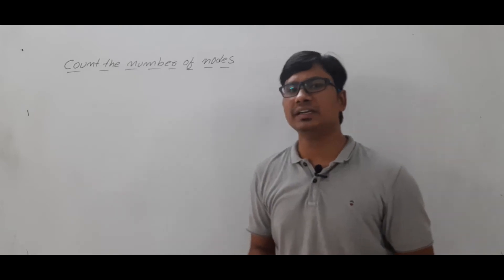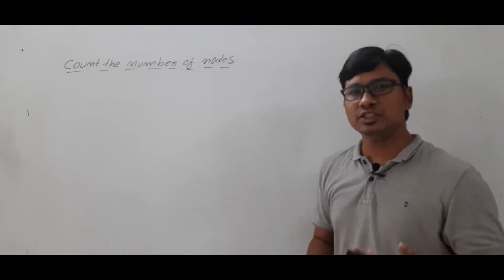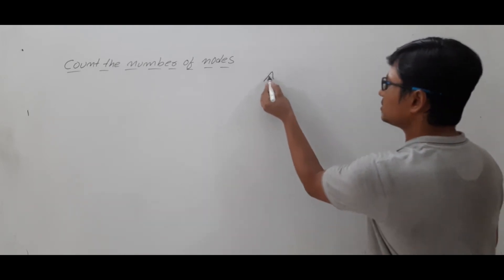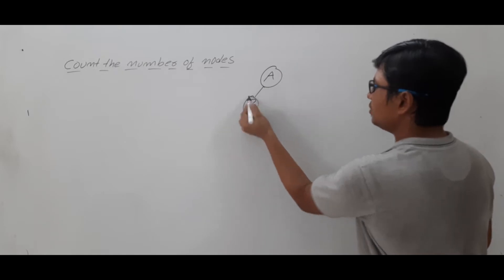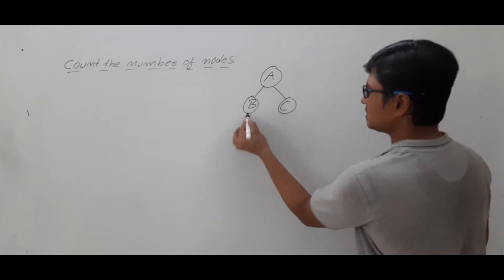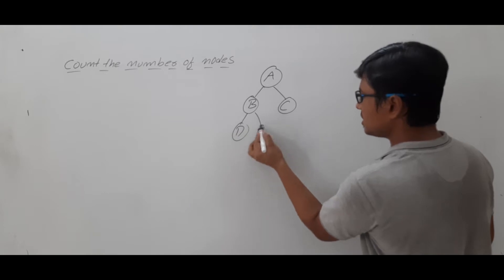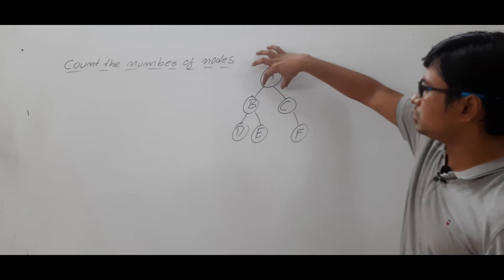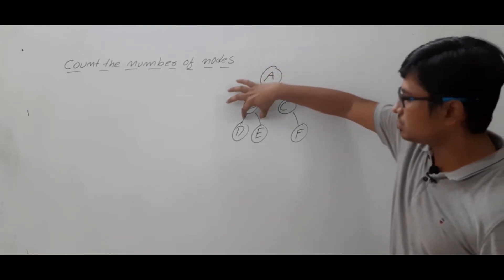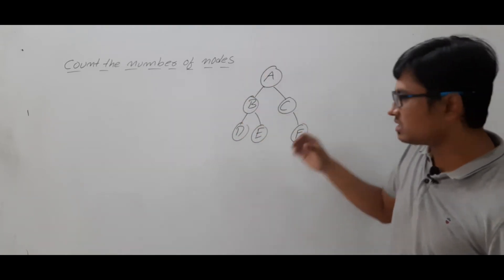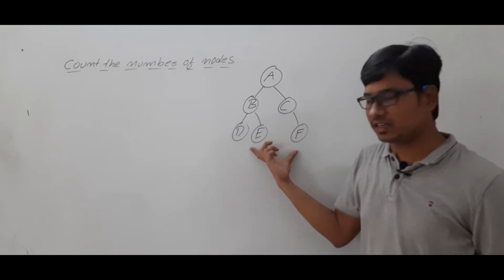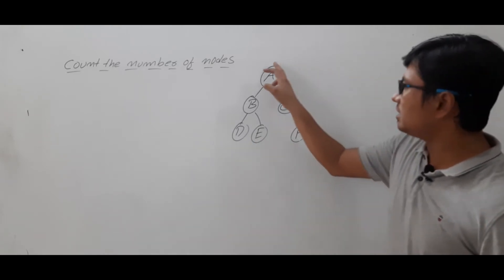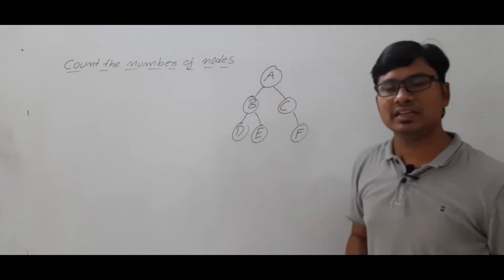First, what is the binary tree? A binary tree is a tree where each node consists of at most two children. Let's take node A — it will have two children, and those children can also have two children, or a single child. A node having two children, a node having two children, a node having a single child, and three nodes that do not have any children. So D, E, F will be called leaf nodes, and A, B, C will be called internal nodes.